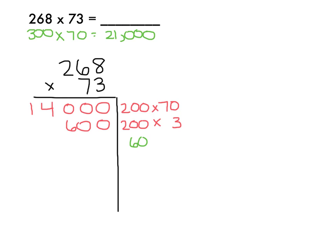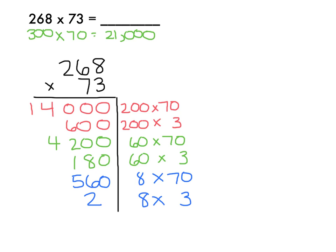60 times 70 is 4,200. 60 times 3 is 180. Then I have 8 times 70 is 560, and 8 times 3 is 24.